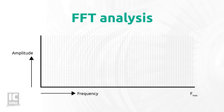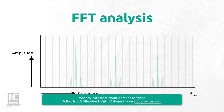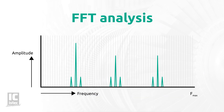Let's take a look at an example of an FFT spectrum. Each line represents a narrow frequency range — bandwidth — with an equal distance from each other. This allows harmonic frequencies and sidebands to be easily recognized in the spectrum.